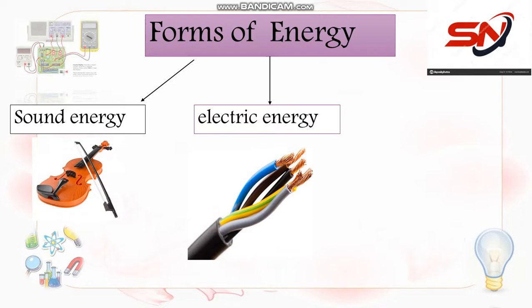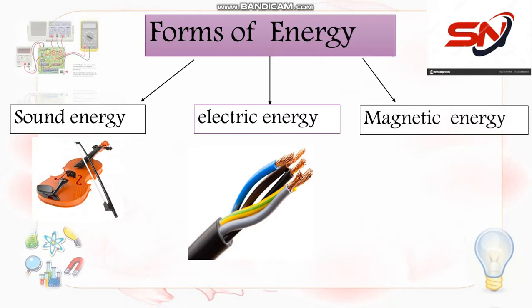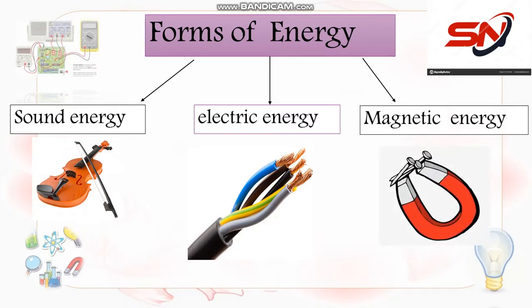كمان من ضمن أنواع الأنرجي، electric energy — اللي هي موجودة في أي سلك كهرباء، بتكهربنا، ما ينفعش نقرب منها. وكمان عندنا magnetic energy — هي الأنرجي produced from the magnet. لو جبت مصمار وقربته للمغناطيس، هلاقي المغناطيس شد المصمار. القوة دي اسمها magnetic energy. يبقى عندنا sound energy، electric energy، magnetic energy.